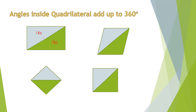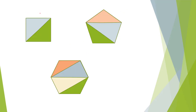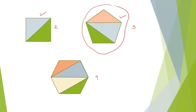Each quadrilateral can be divided into two triangles, and the sum of angles inside a triangle is 180 degrees. So 180 plus 180 equals 360. A quadrilateral has two triangles inside, a pentagon has three triangles inside, and a hexagon has four triangles inside. As the number of sides increases, the number of triangles also increases. The sum of angles inside a pentagon is three times 180, which is 540 degrees.